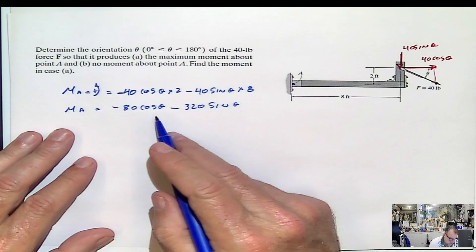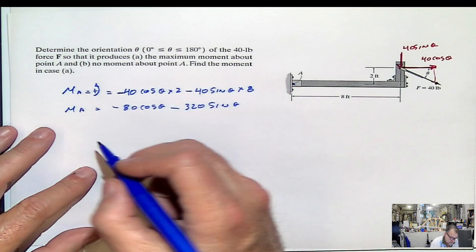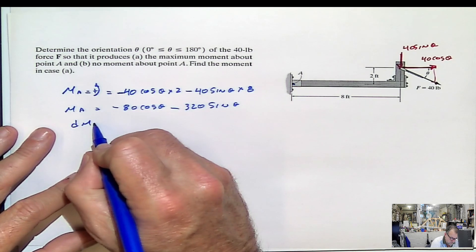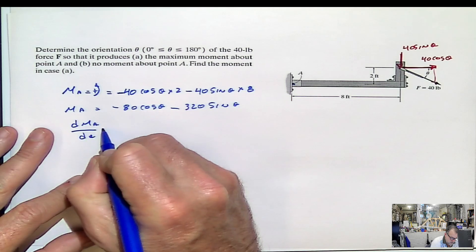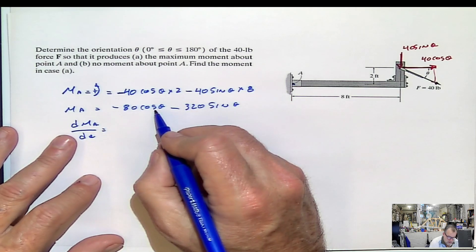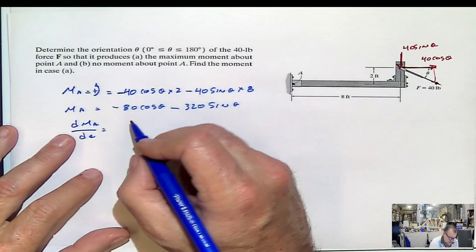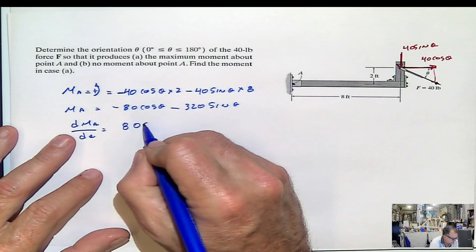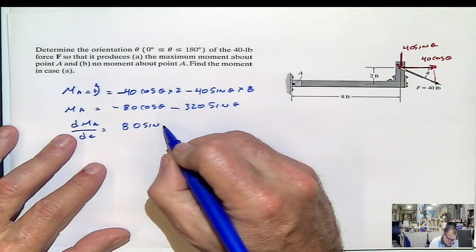Now, how do you find the angle for the maximum moment? Take the derivative. Derivative of the moment with respect to the angle. And that would be 80. Derivative of cosine is negative sine, so it's going to be 80 sine of the angle.